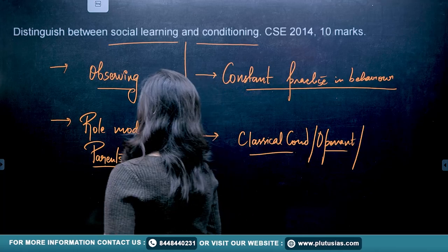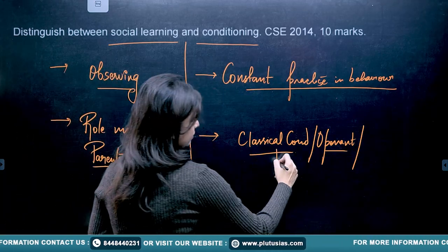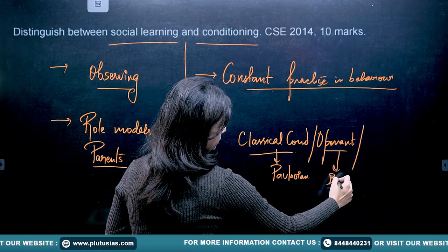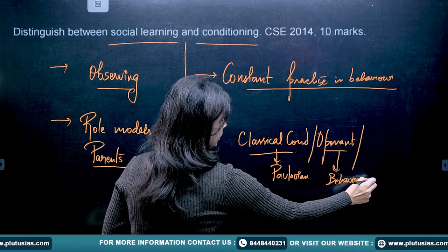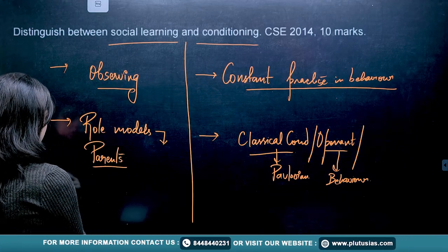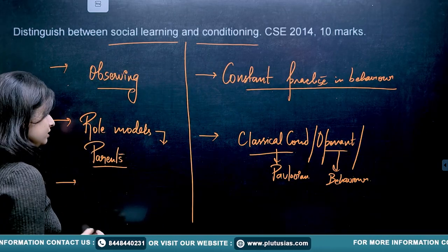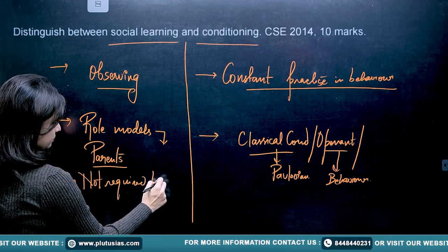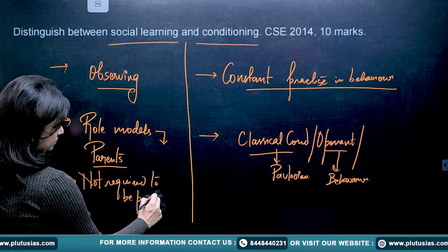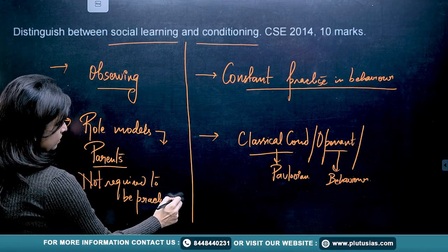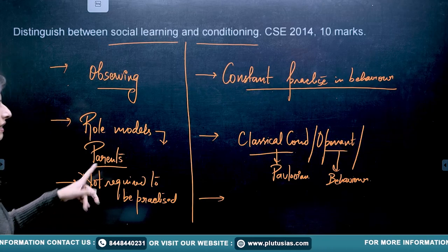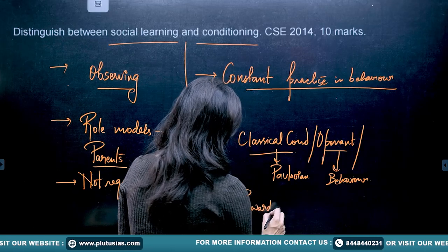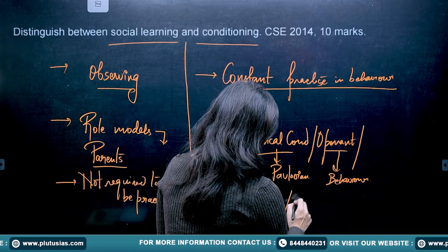So you have classical conditioning and operant conditioning. You can write about Pavlovian conditioning and behavioral changes. In social learning, observation is the key and practice is not required. In conditioning, constant rewards and punishment will bring changes — so rewards and punishment are central.